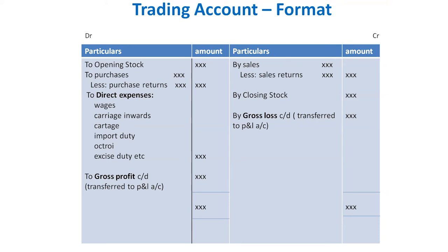The third transaction is sales. The entry for sales is on the credit side. During the year, when goods are sold, the value of sales is entered in the inner column. If there are any sales returns given in the problem, deduct them from the total sales, and enter the balance in the amount column.